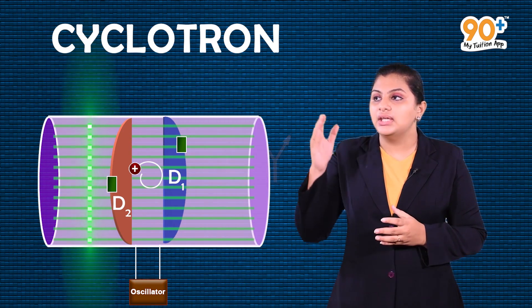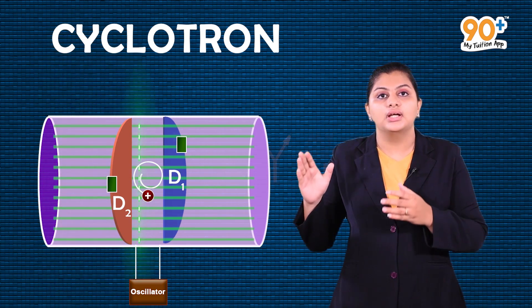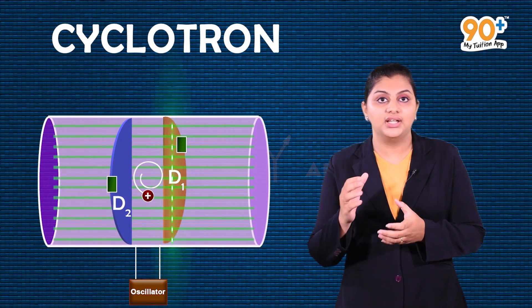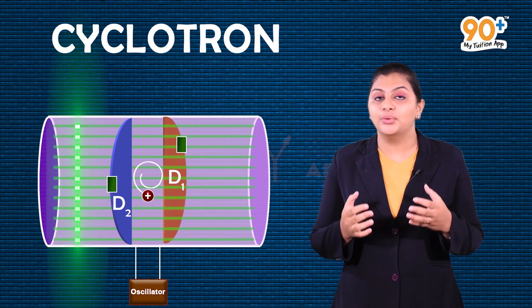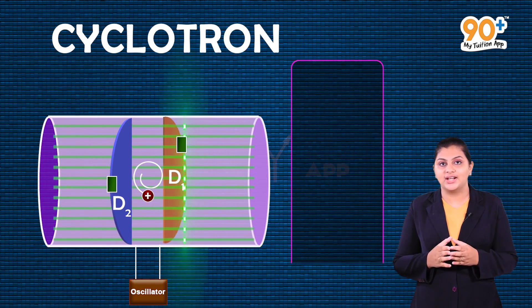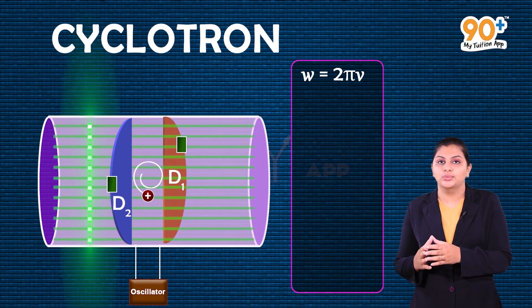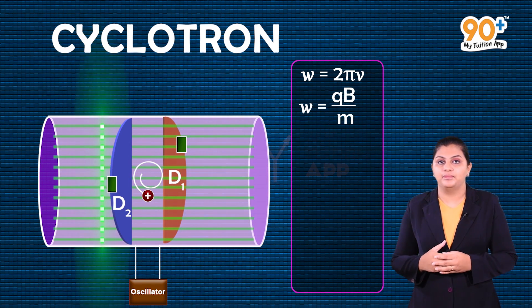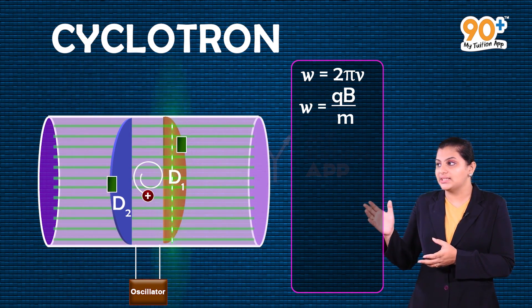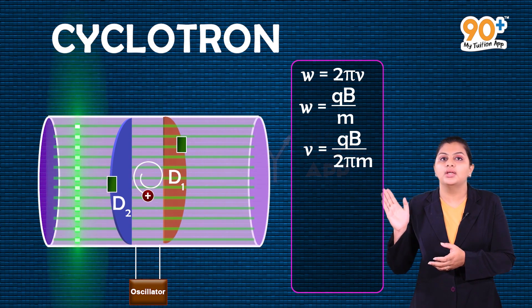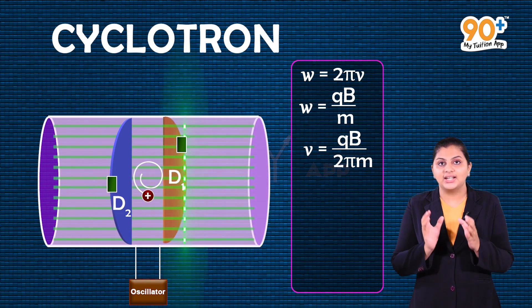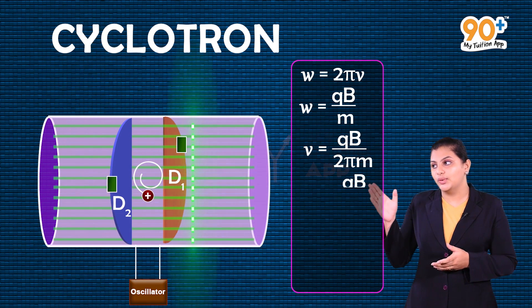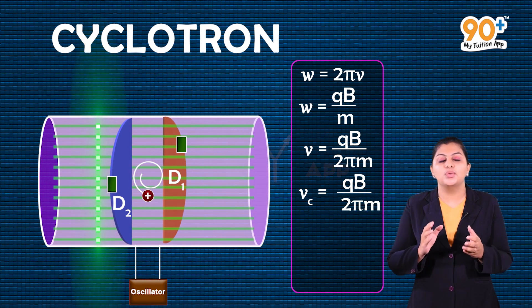Again the semi-circular path continues until reaching the gap. What is the cyclotron frequency? We know angular momentum omega equals 2πν, and omega equals qB by m. Equating both equations, ν is equal to qB divided by 2πm. This is the cyclotron frequency.